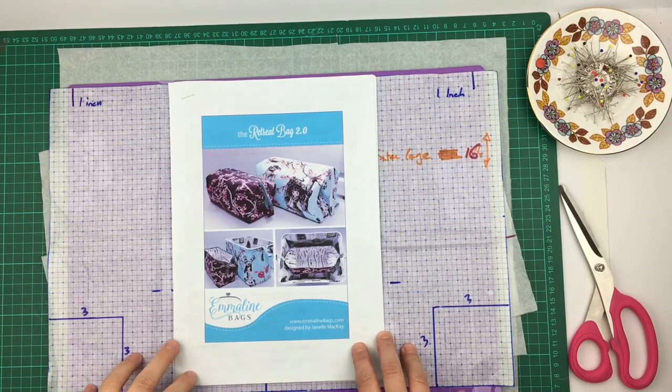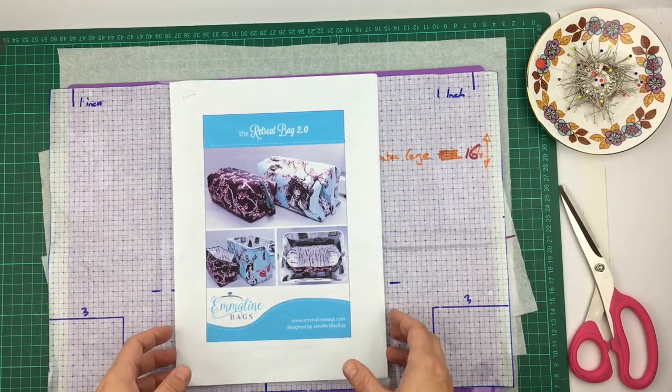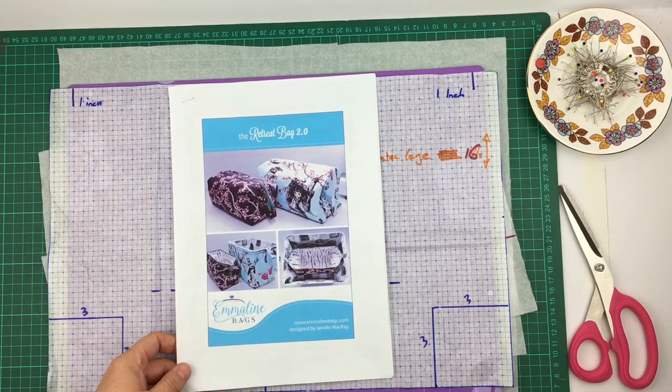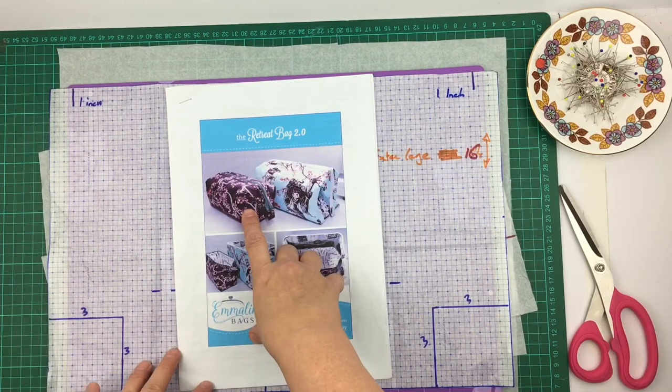In front of me today I've got the Retreat Bag pattern by Emmeline Bags, which is a fabulous free download. The two on the front of the picture here, this is what I call the small one, which is really great as an everyday wash bag.